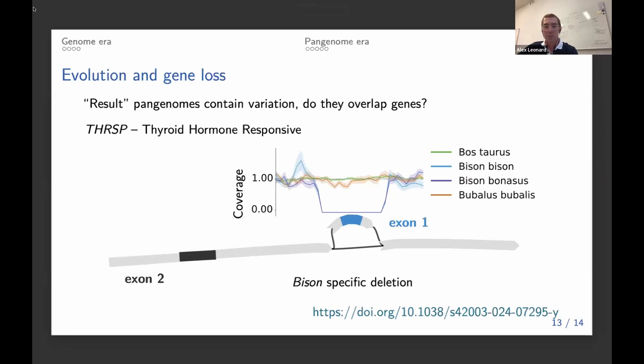And we can do this much more generally. So this was based on a handful of samples that we had assemblies for. But we looked again to public databases and aligned short read sequencing from hundreds of samples. And you can see that this region is always missing and only missing in bison. So it's present in both cattle and in buffalo.